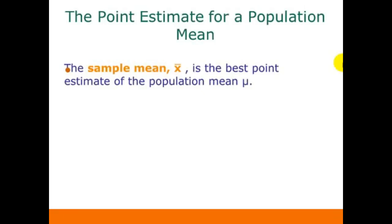We talked about point estimates for proportions. Now we want to talk about point estimates for population means. What comes from our sample data is going to give us the best point estimate for our population mean. So the sample mean, x-bar, is the best point estimate of the population mean, mu.